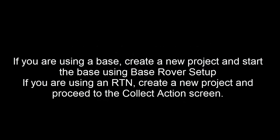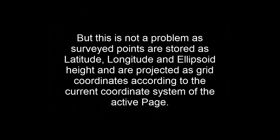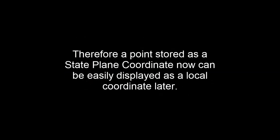If you are using a base, create a new project and start the base using base rover setup. If you are using an RTN, create a new project and proceed to the collect action screen. We will be creating a new projection — a low distortion projection — even though currently the project is set up with a state plane coordinate system. This is not a problem, as all survey points are stored as latitude, longitude, and ellipsoid height and are projected as grid coordinates according to the current coordinate system of the active page. Therefore, a point stored as a state plane coordinate now can be easily displayed as a local coordinate later.